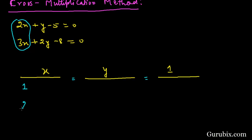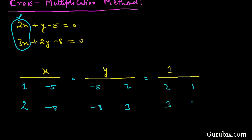So we write B1 = 1, B2 = 2, and the constants C1 = -5, C2 = -8, repeating C1 and C2. Then we write the coefficients of x: A1 = 2 and A2 = 3, and repeat them. Finally, we write the coefficients of y, B1 and B2, and draw the cross multiplication signs.